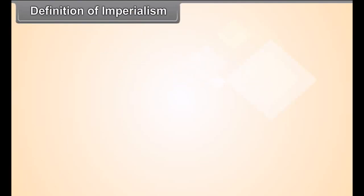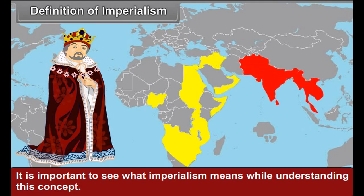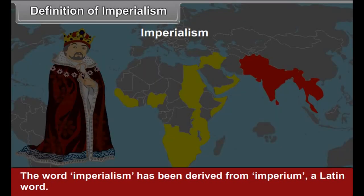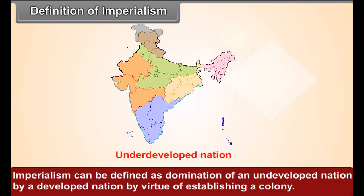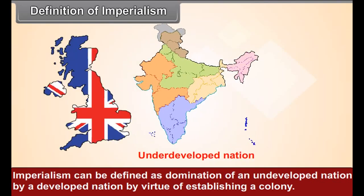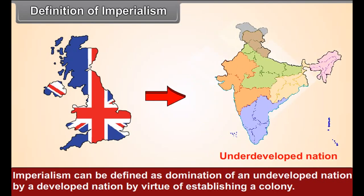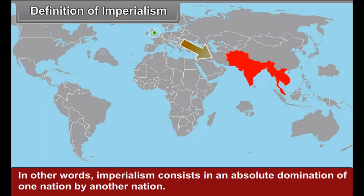Definition of Imperialism: The word imperialism has been derived from 'imperium,' a Latin word meaning rights or rule. Imperialism can be defined as the domination of an undeveloped nation by a developed nation by virtue of establishing a colony. In other words, imperialism consists in an absolute domination of one nation by another nation. Imperialism sprouted from colonialism.